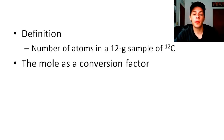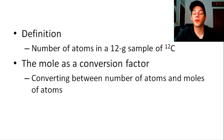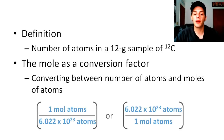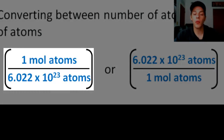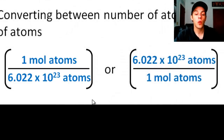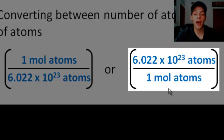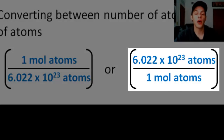The mole can be used as a conversion factor — to convert between the number of atoms of an element and the number of moles of atoms of an element. Avogadro's number as a conversion factor can take two forms: to convert from atoms to moles, put Avogadro's number on the bottom and one mole of atoms on top; or to convert from moles to atoms, put one mole of atoms on the bottom and Avogadro's number on top.